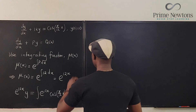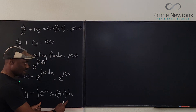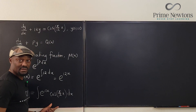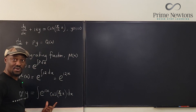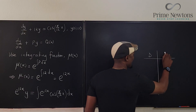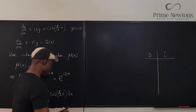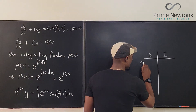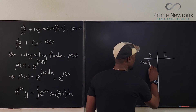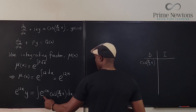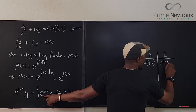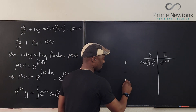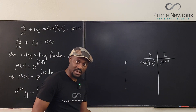Our main task is to integrate e^(12x)·cos(πx/12). I'm going to use the DI method — the table method — to do integration by parts. We differentiate the trig function cos(πx/12) and integrate e^(12x), alternating signs: plus, minus, plus, minus.